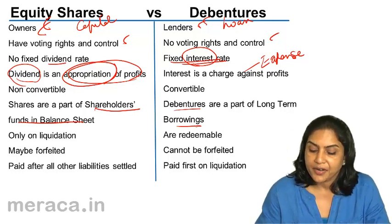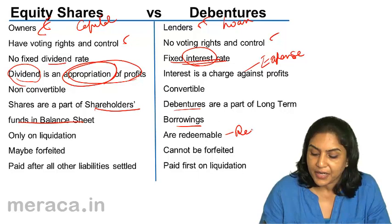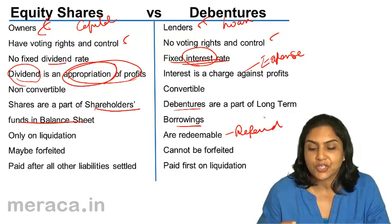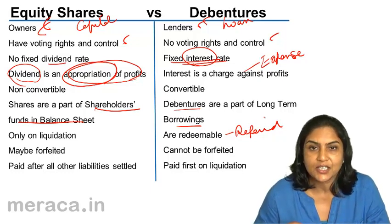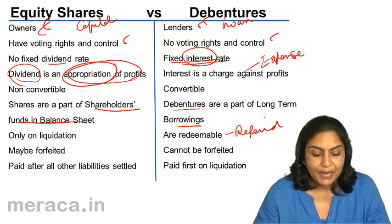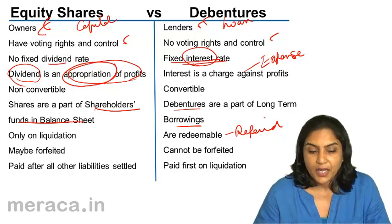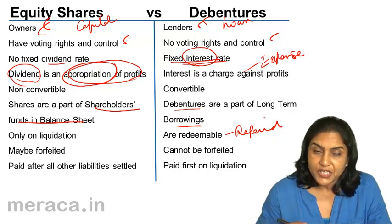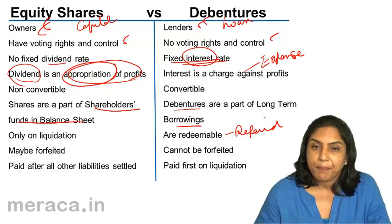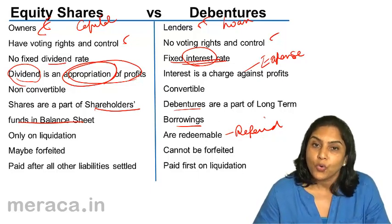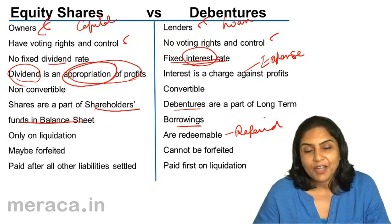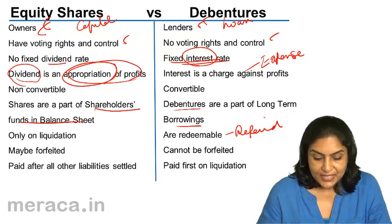Debentures are redeemable — they have to be repaid after a fixed period. If the debenture has a life of five years, they have to be repaid after five years, maybe ten years, maybe eight years. But equity shares are not really redeemable. Equity shareholders are paid back their capital only on liquidation, if there are surplus assets.